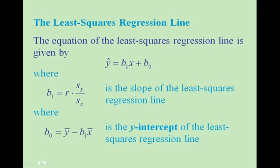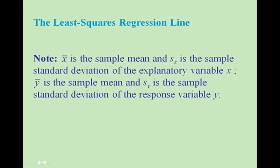The equation of the least squares regression line is y-hat equals b1 times x plus b0. b1 equals r times the standard deviation of y divided by the standard deviation of x — this is the slope. b0 equals y-bar minus b1 times x-bar — this is the y-intercept. Here, x-bar is the sample mean for x, s sub x is the sample standard deviation of the explanatory variable x, y-bar is the sample mean for y, and s sub y is the sample standard deviation of the response variable y.